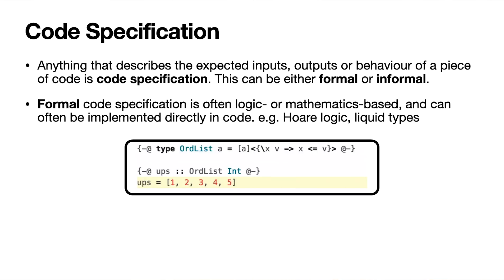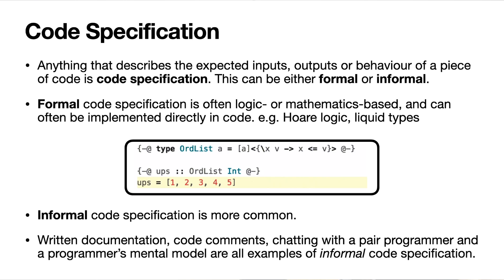Formal code specification is usually expressed in terms of logic or mathematics and can often be implemented directly in code. If you've heard of Hoare logic or Hoare triples, this is an example of formal specification. Liquid types are another example, actually implemented in a couple of programming languages like Liquid Haskell. But formal code specification is not as commonly encountered as informal code specification. Anytime you read or write documentation, comments in your code, Stack Overflow posts, chat with a colleague, or just hold a mental model of how your game works — all of these are examples of informal code specification. They still describe expected behavior of code, but they are not rigorously expressed.